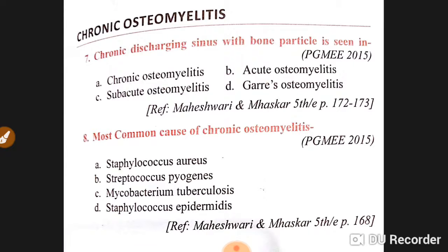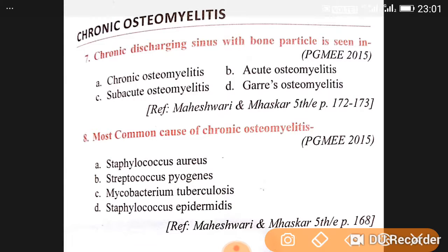This is the MCQs about chronic osteomyelitis. Chronic discharge sinus with bone particle is seen in — it is mainly seen in chronic osteomyelitis.